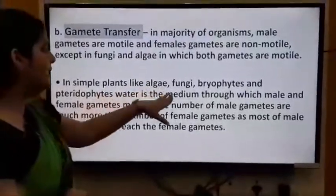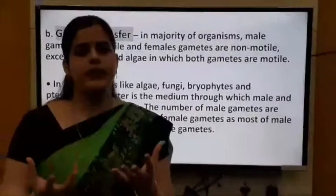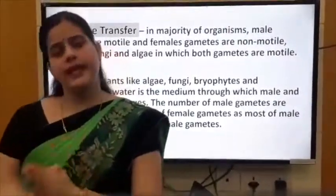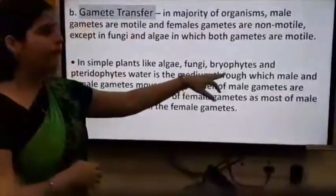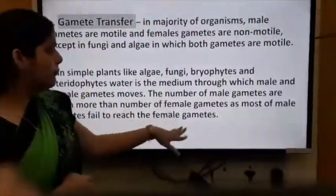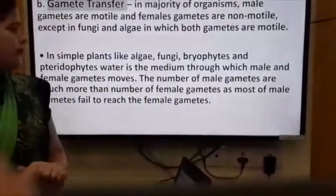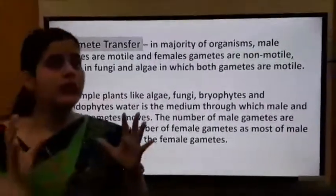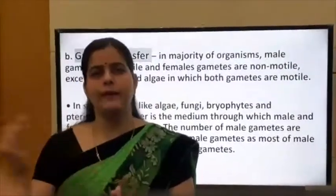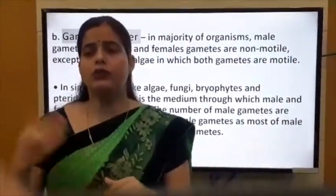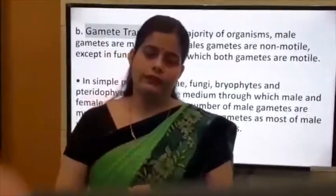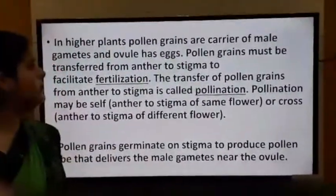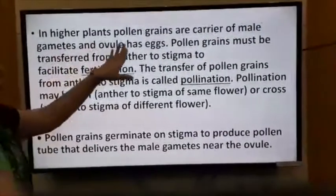The number of male gametes is much greater than the number of female gametes because most male gametes fail to reach the female gametes. In higher plants, pollen grains are the carriers of male gametes and the ovule contains the egg. Male gametes are transferred to the egg by means of pollen grains.